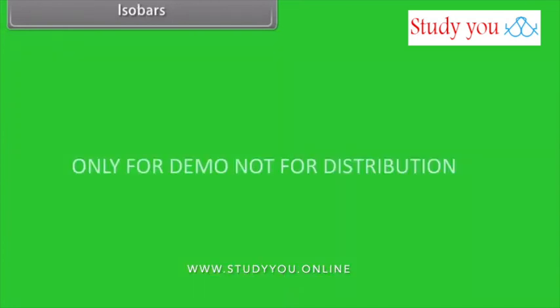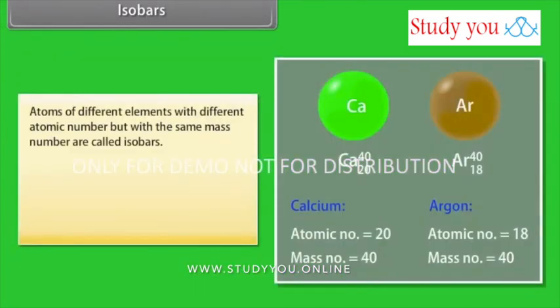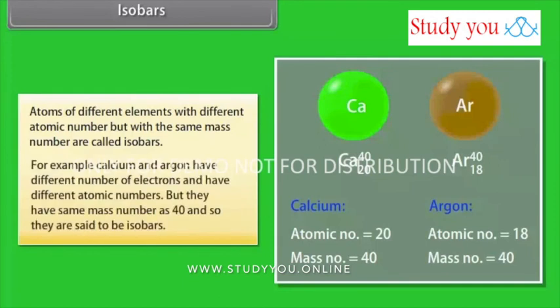Isobars. Atoms of different elements with different atomic number but with the same mass number are called isobars. For example, calcium and argon have different number of electrons and have different atomic numbers, but they have same mass number as 40 and so they are said to be isobars.